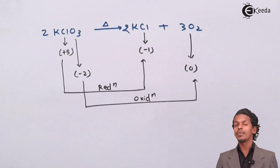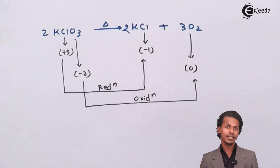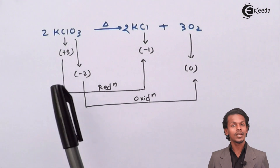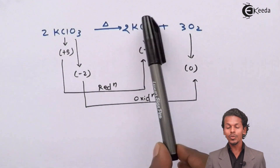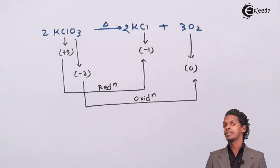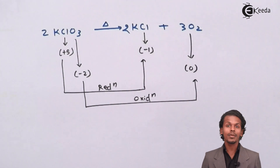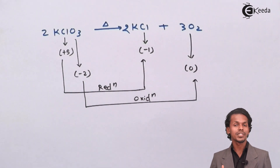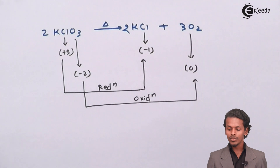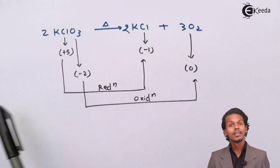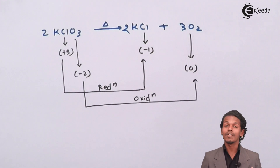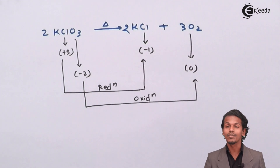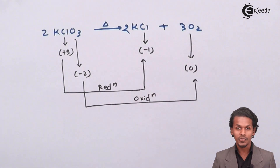This overall reaction is a type of decomposition reaction. One molecule is separated or divided into two or more product components, and the oxidation numbers of two different atoms both change — one increases while the other decreases. This kind of reaction is known as a decomposition redox reaction.